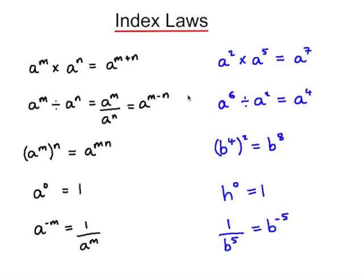In conclusion, here is a summary of the index laws: the first law is about multiplying numbers with the same base; the second is dividing with the same base; the third is raising a base to a power and then to another power; anything to the power of zero is one; and a number raised to a negative power is one over the same base raised to the positive power. Algebraic examples of each are provided.